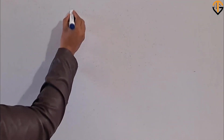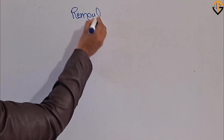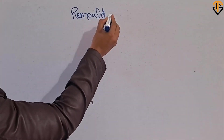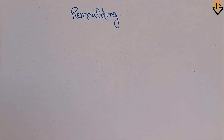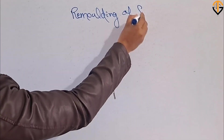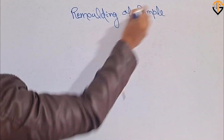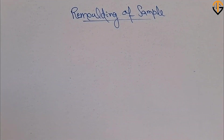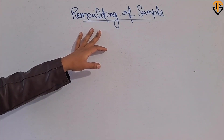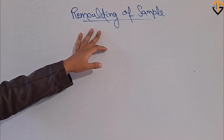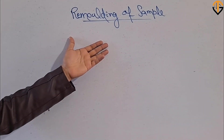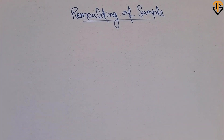Bismillahirrahmanirrahim. Now we'll try to learn about remolding the soil sample — how to remold the soil sample. Remolding is an alternative to the undisturbed sample. If we don't have the undisturbed sample, then we have to remold the soil sample for performing tests like direct shear test, UCS test, and so on.